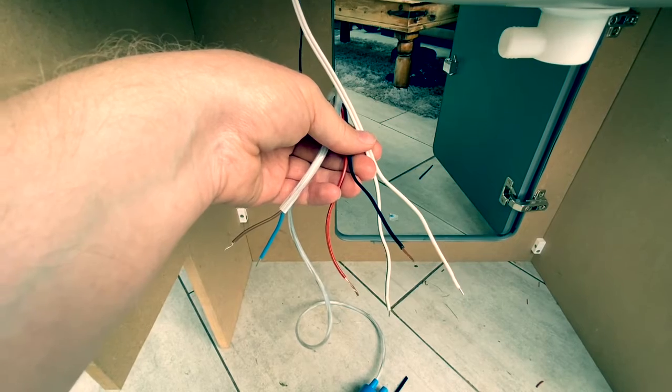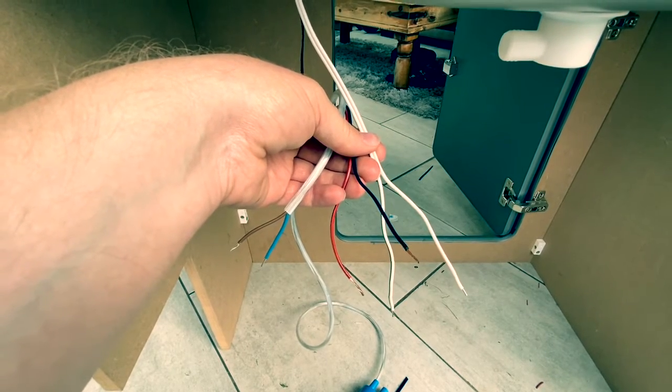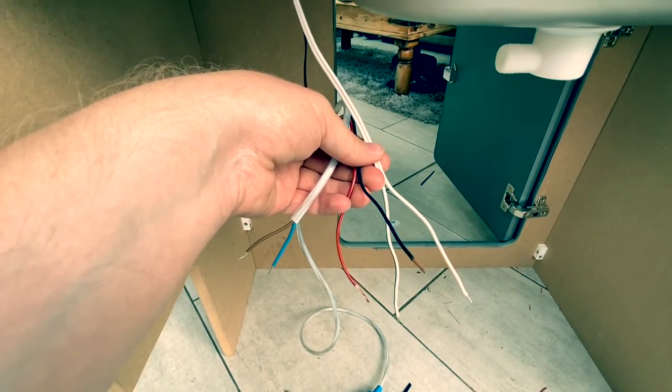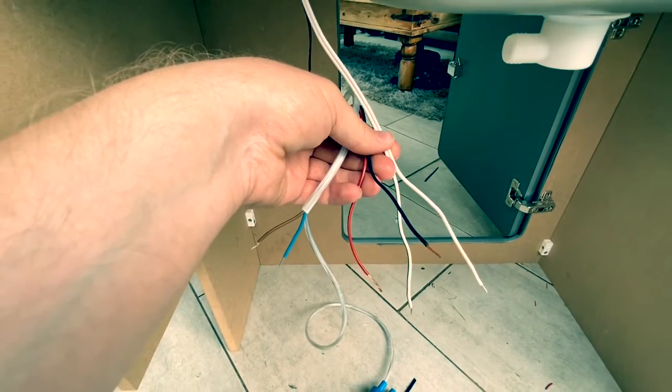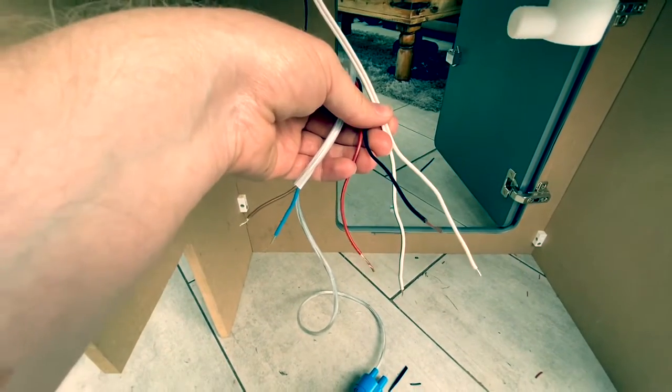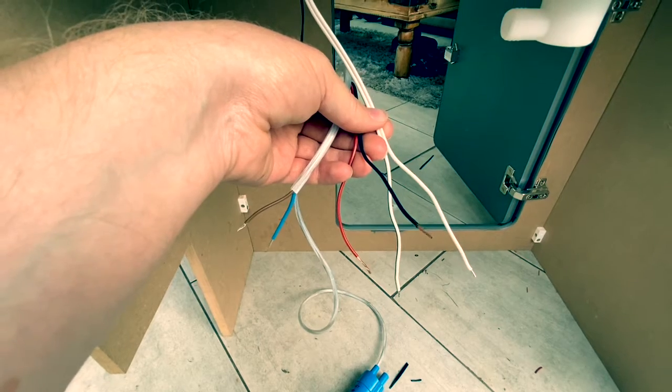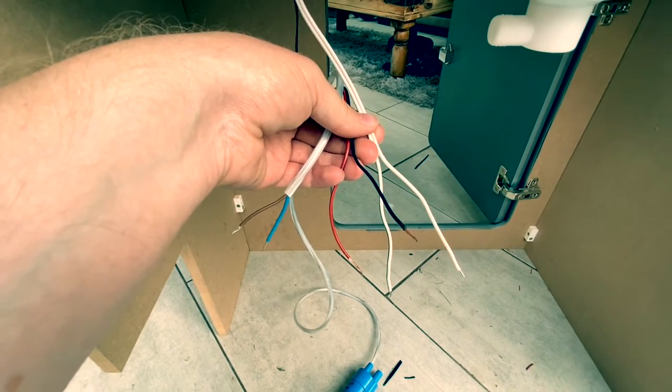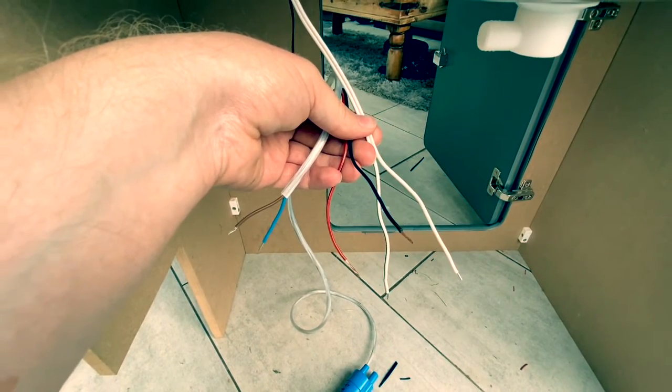The negative of the pump is going to go to the negative of our battery power. And then the positive of the tap finally is going to go to the actual positive on our battery power as well. So that's going to be the sequence of the connections.